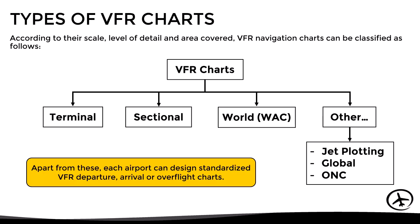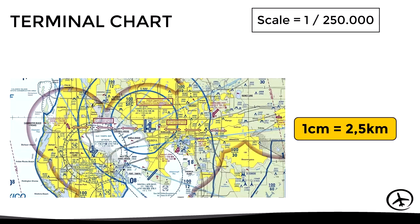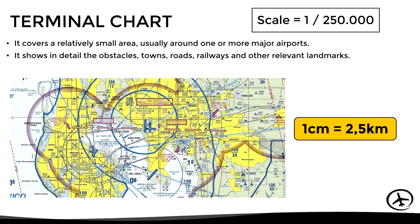So with this being said, let's start with the terminal chart, which has a scale of 1 in 250,000. This means that each centimeter measured on the chart is equal to 2.5 kilometers. Now, the main characteristics of this chart is that it covers a relatively small area, usually around one or more major airports or cities. It shows in detail the obstacles, towns, roads, railways, and other relevant landmarks, and also provides detailed aeronautical information of the area and the airspaces.